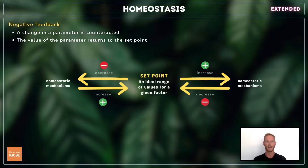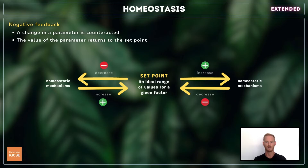Homeostatic control by negative feedback is a process that maintains a stable internal environment by reversing any changes that occur from the set point, which is an ideal value or narrow range of values for a given factor. When a factor deviates from its set point, the change is detected and a negative feedback loop is activated to return it.